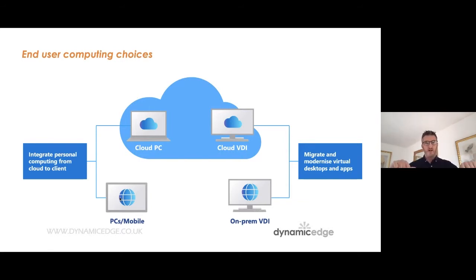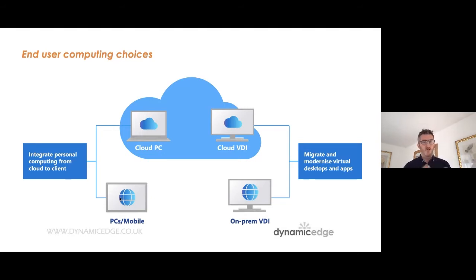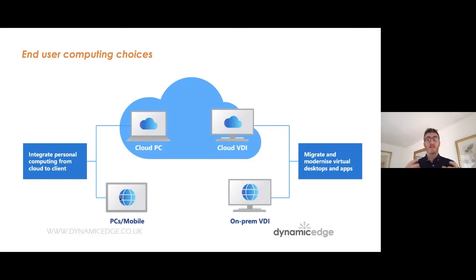At the bottom left we've got PCs or mobile — your laptop device where you use the local desktop and you've got the power of just your own machine. Bottom right we've got on-prem VDI, something like remote desktop services or terminal services, where your server estate sits in your office environment and you allow people to have a remote desktop from your server environment.